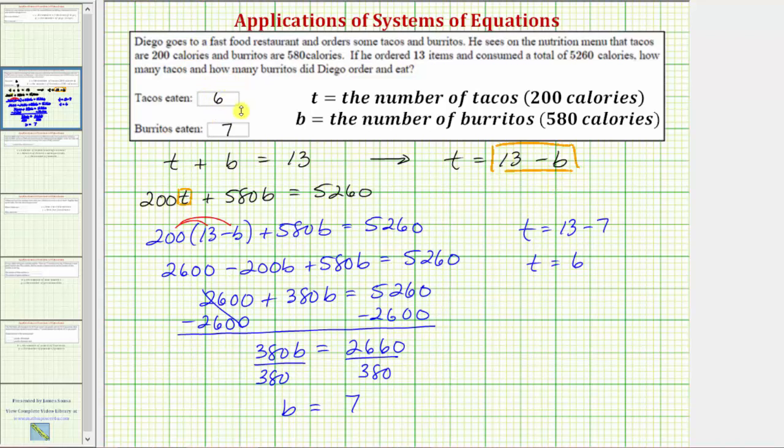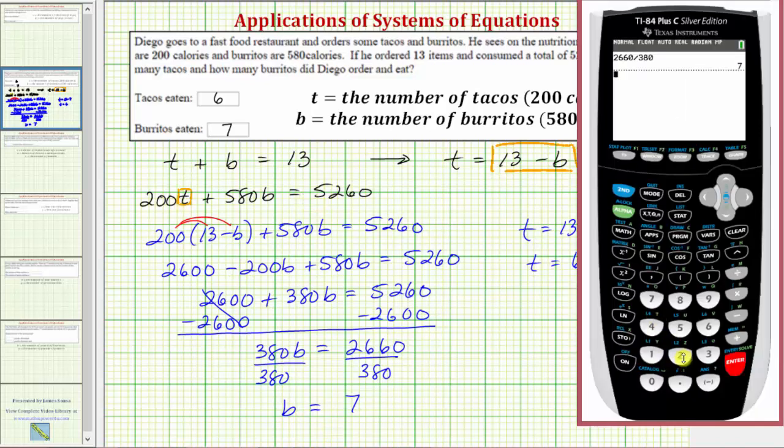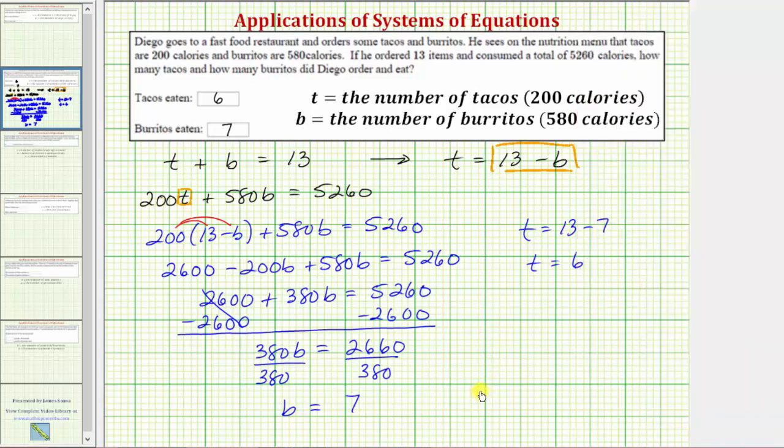To verify our solution, these values must satisfy both equations. We can easily see that six plus seven is equal to 13. Let's also verify these values of t and b satisfy the second equation. So using the calculator, we would have 200 times t which is six plus 580 times b which is seven. This must equal the total calories of 5,260 which it does. So this does verify our solution is correct. I hope you found this helpful.